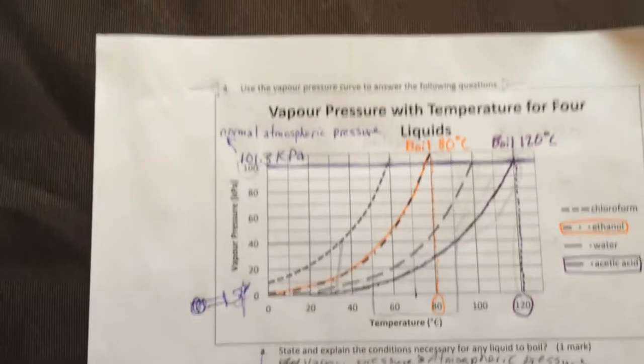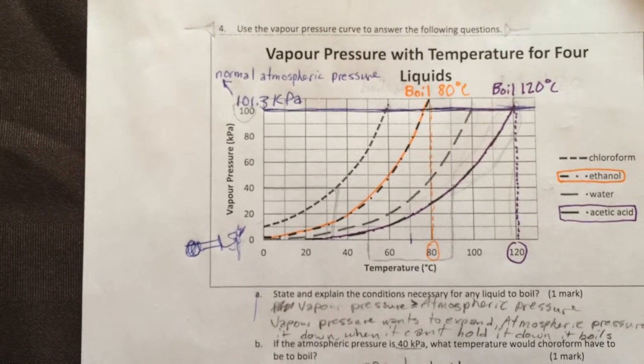Which of the four substances would have the strongest intermolecular forces? How do you know?